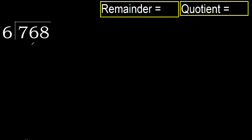768 divided by 6. 7 is not less, therefore start with 7. 6 multiplied by which number is nearest to 7, but not greater?